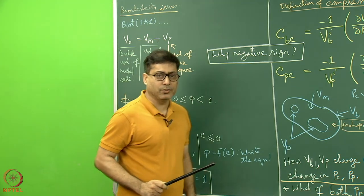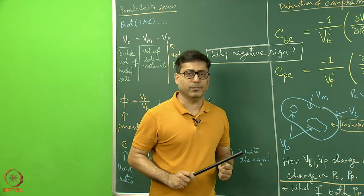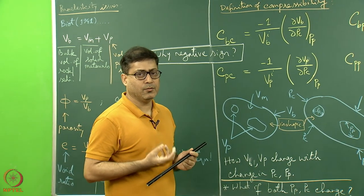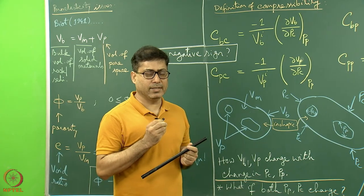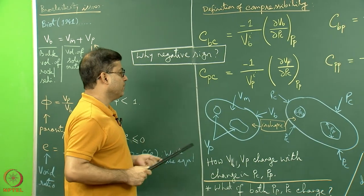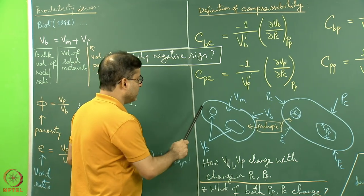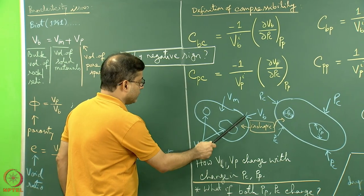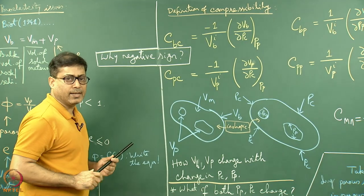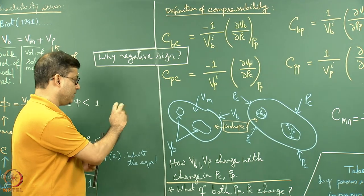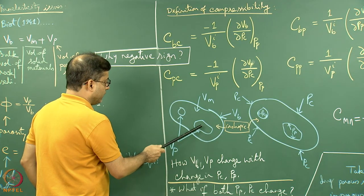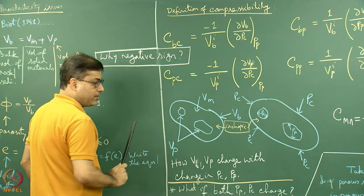With this basic background, we are going to define the compressibility of such porous material where fluid is present in the pore space and is also exerting pressure. What is the formulation? Imagine a rock material with two pore spaces — there can be more, but the drawing shows two. The total volume of these pore spaces equals Vp.